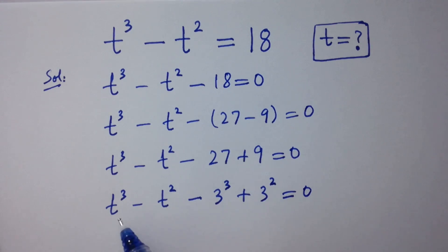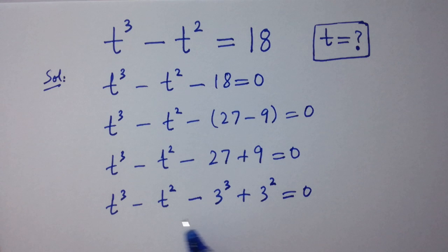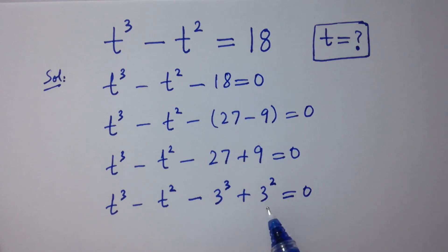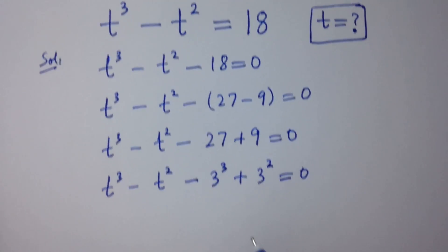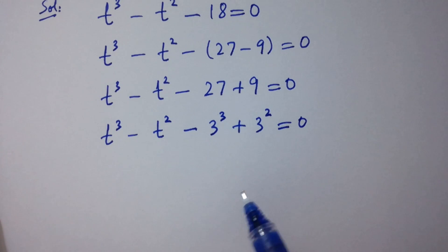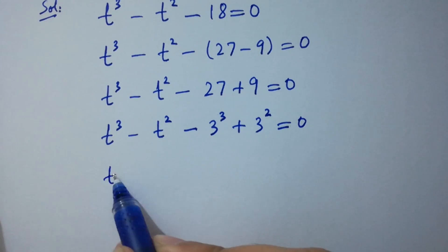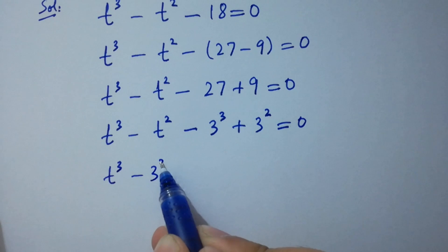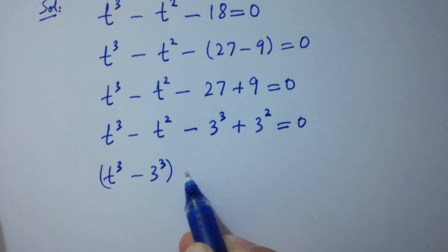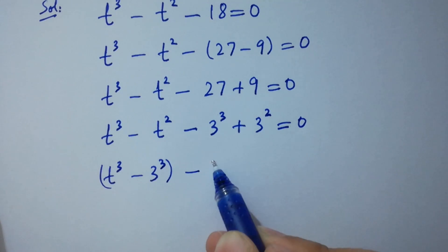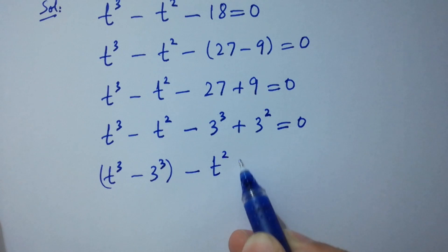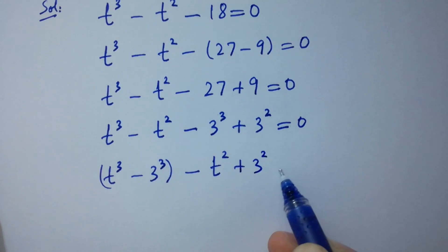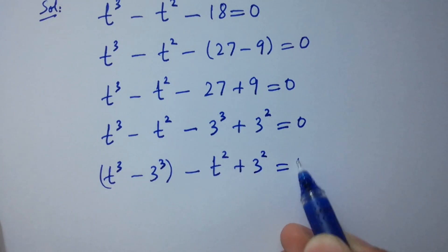By corresponding, here is t cube and here is 3 cube, here is t square and here is 3 square. So this becomes t cube minus 3 cube minus t square plus 3 square equal to 0.